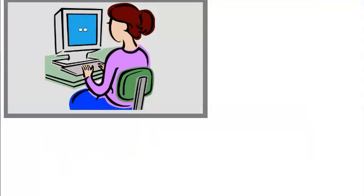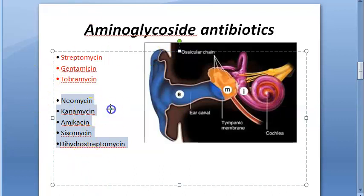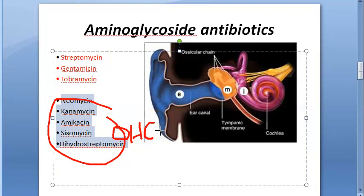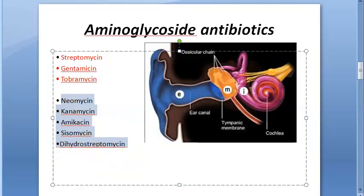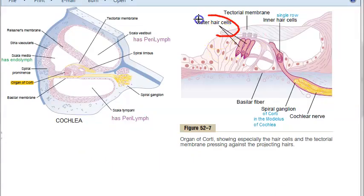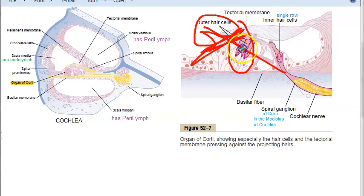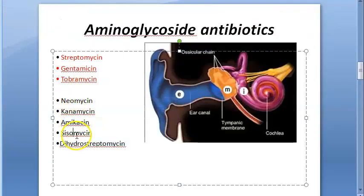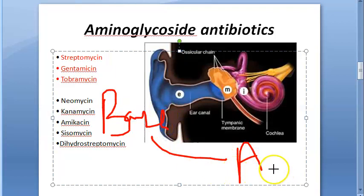The side effects of aminoglycoside antibiotics include ototoxicity, nephrotoxicity, and neuromuscular blockade. Regarding ototoxicity, these drugs cause selective destruction of the outer hair cells in the organ of Corti of the cochlea. The damage starts at the basal coil and progresses toward the apex of the cochlea.